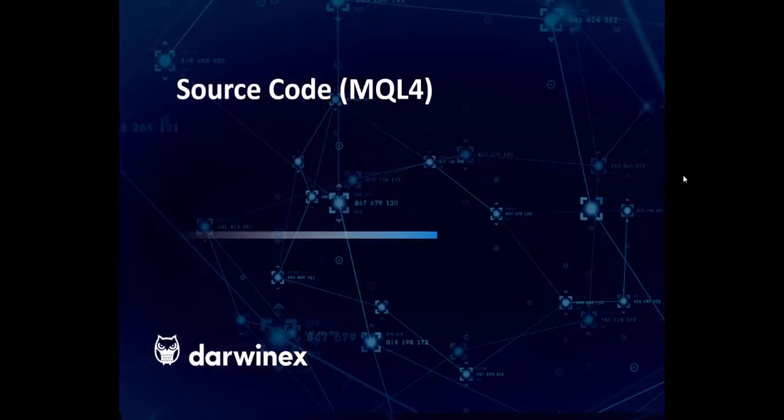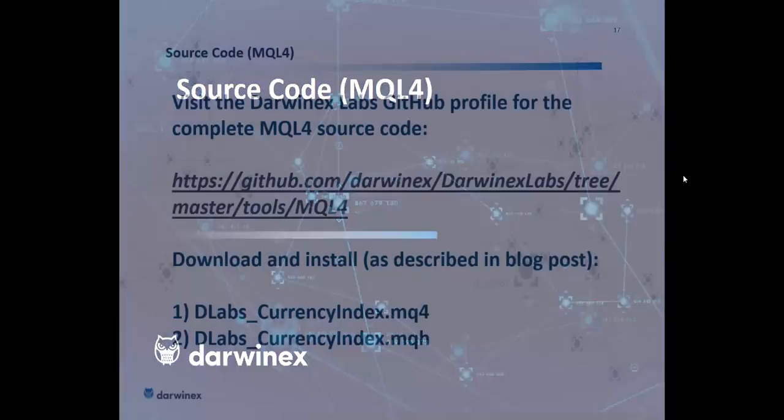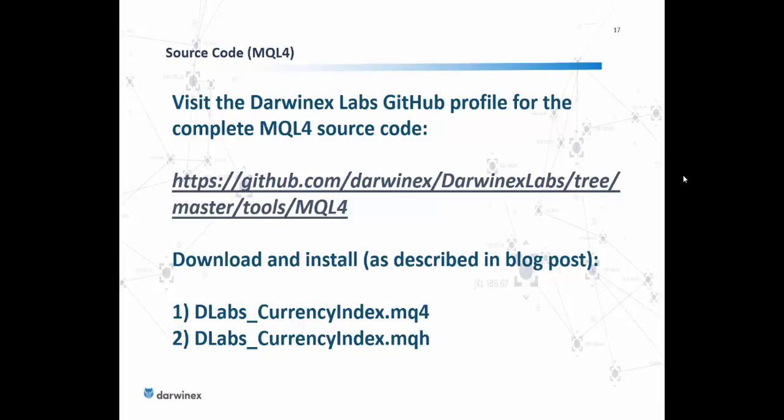Source code in MQL4 has been provided on our GitHub profile. Visit github.com/tarwinx/tarwinx-labs to see our entire tree of tools, research, and data sets. Proceed to the tools directory in the master tree, then go into the MQL4 directory where you'll find two files: dlabs_currencyindex.mq4 and .mqh. The specifics of installing these are presented in the blog post on constructing a currency index indicator on the DarwinX blog.